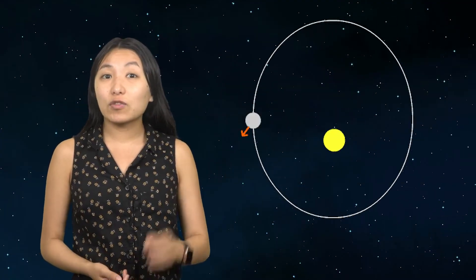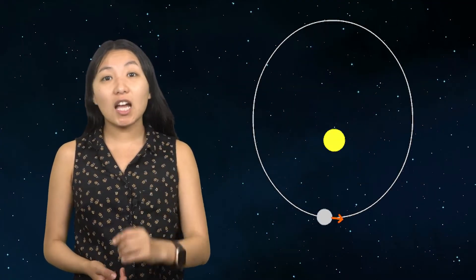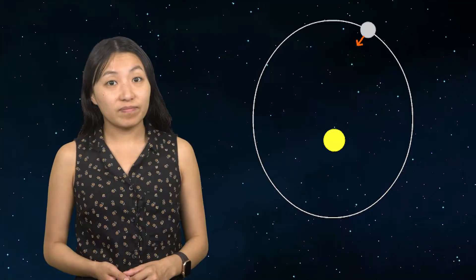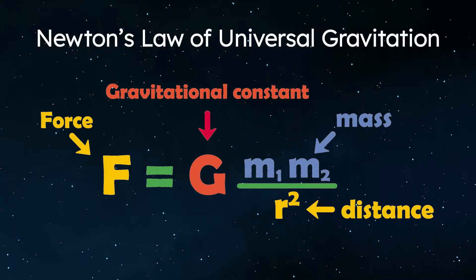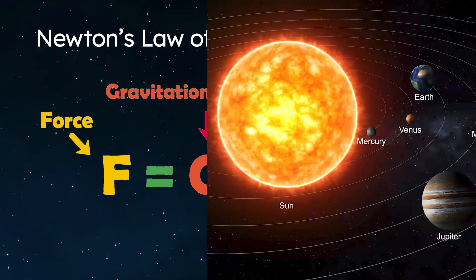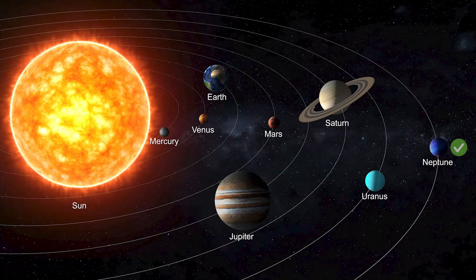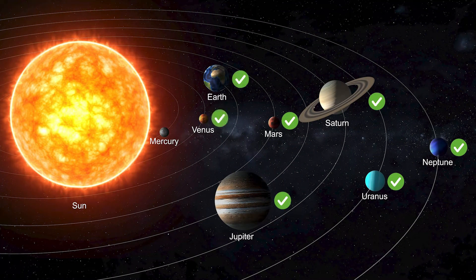Ever have one of those puzzles where, no matter how you rotate the piece, it just doesn't fit? That's how astronomers felt for a long time about Mercury's orbit. After Newton's law of universal gravitation was established, scientists could predict planetary orbits with incredible accuracy. But Mercury didn't follow the rules.